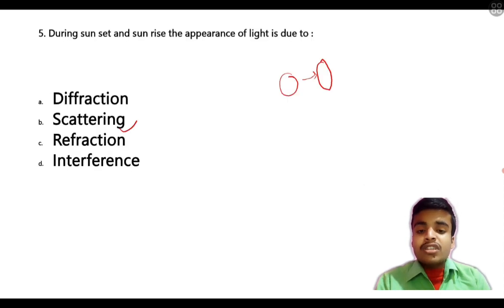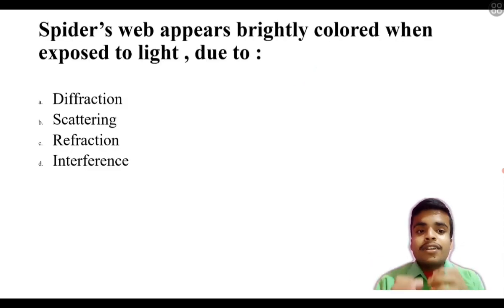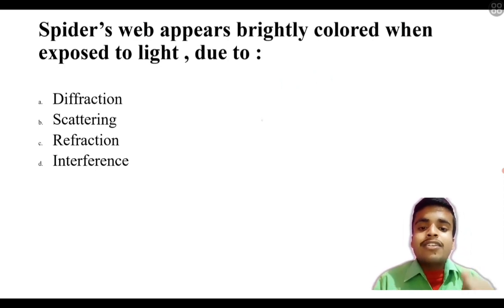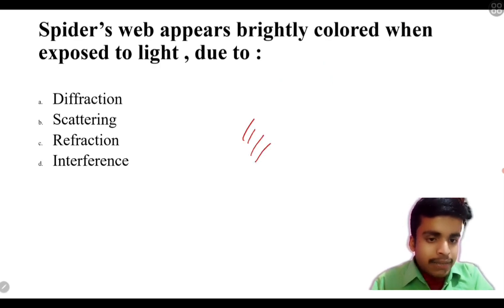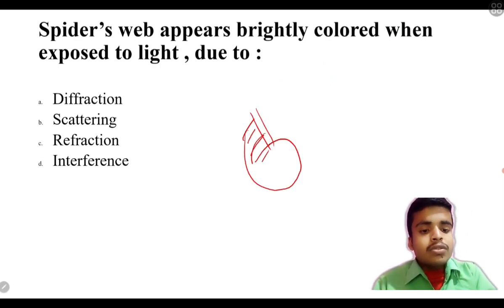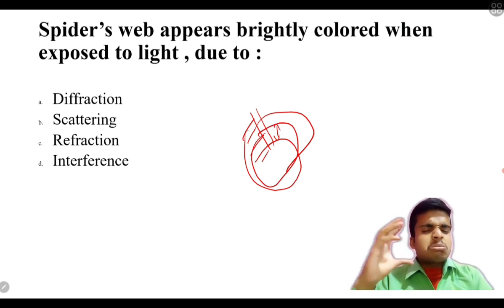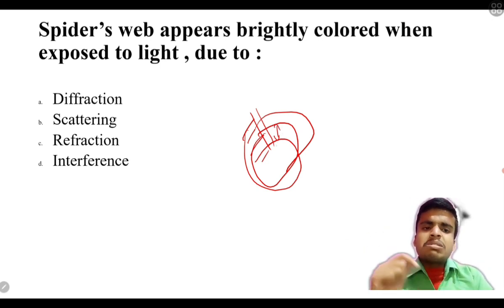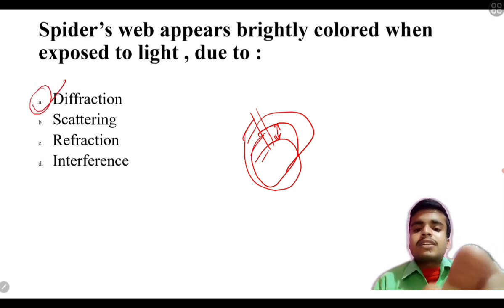Next: a similar type of question — a spider's web appears brightly colored when exposed to light because of what? This is the same type as the previous scattering question but different. The spacing between the threads of the spider's web is very small, similar to a single slit. So this is due to diffraction — single slit diffraction — which causes the spider's web to appear brightly colored.